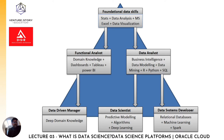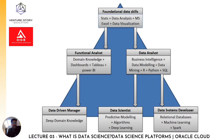If you want to become a data analyst, you should have business intelligence skills, which is the most important one. You should also know about data modeling, data mining, R, Python, and SQL. If you want to specifically become a data scientist, the best skills you should have are predictive modeling, algorithms, and deep learning. If you want to become a data systems developer, relational databases, machine learning, and Spark are the major tools and skills you should familiarize yourself with.